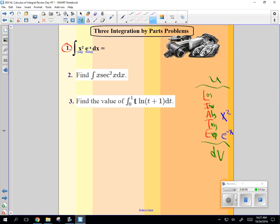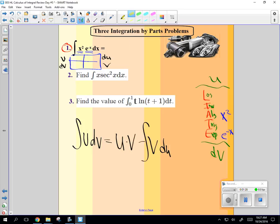So when we make our box, U, DV, DU, and V. We use this box because the actual formula is U DV equal to U times V minus integral of V DU. And the reason I use the box is that when we're done, we can organize this U, V minus anti-derivative V, DU. It's all kind of shaped up that way.